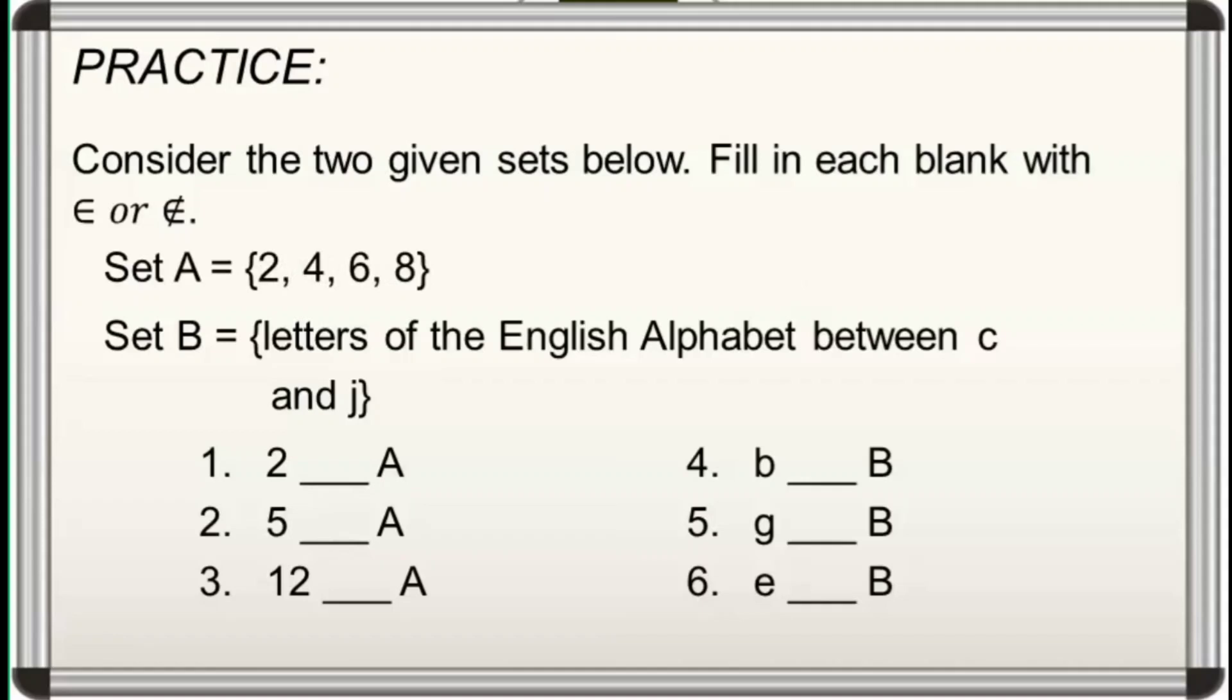For set B, which contains the letters of the English alphabet between C and J, we have D, E, F, G, H, and I.